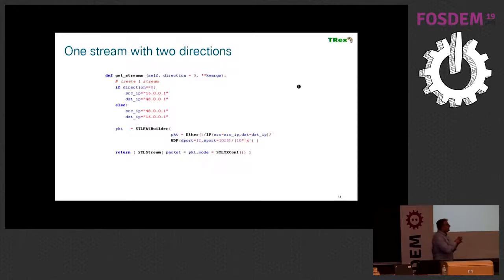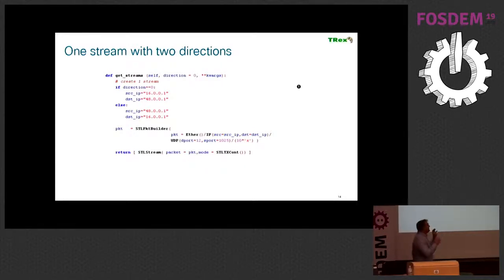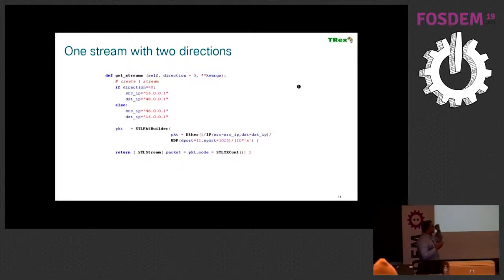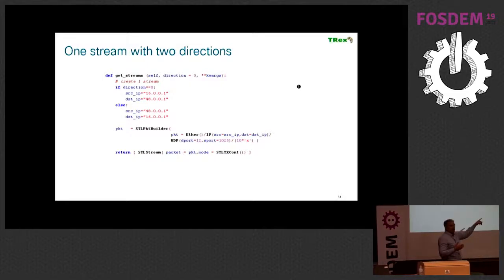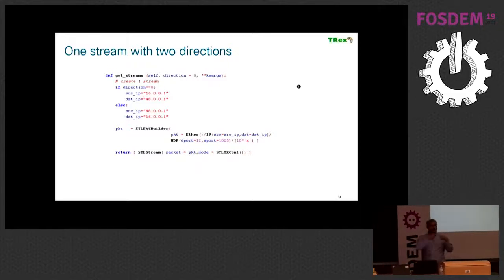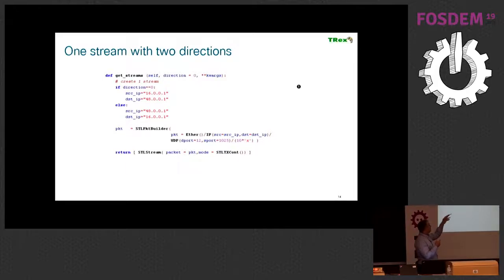We separated the definition of the profile from what to do with the profile. This is the definition of the profile. I defined a simple continuous stream with this definition: Ethernet over IP over UDP 10 bytes. This is the packet. There will be different types of packets from different directions. From one direction, it will be 16.0.0.1 to 48.0.0.1, and the other direction is the opposite. In this way, we can create bidirectional traffic. This is the profile. Then we can manipulate the profile, load it. There is a console that you can start the profile, load the profile, get statistics about the profile, and so forth.